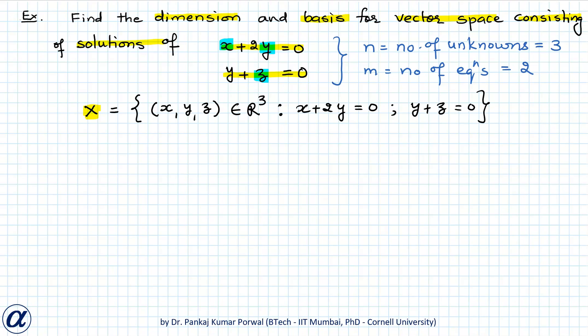Now, if I write this system of linear equations in matrix form, then that will be [1, 2, 0; 0, 1, 1] times [x; y; z] equals [0; 0].